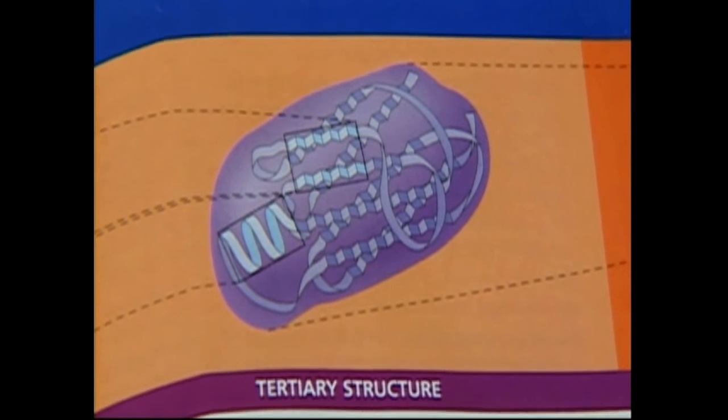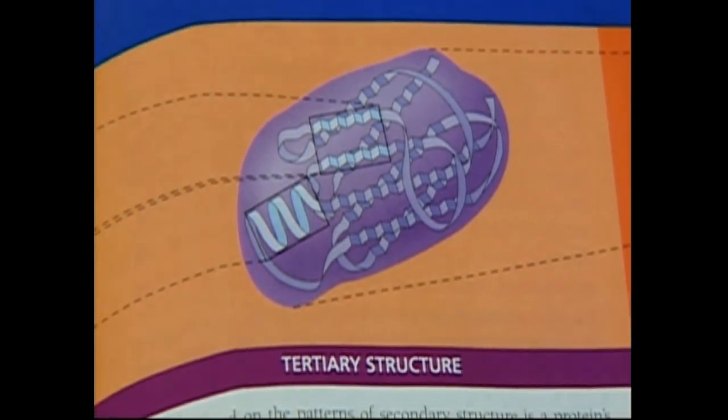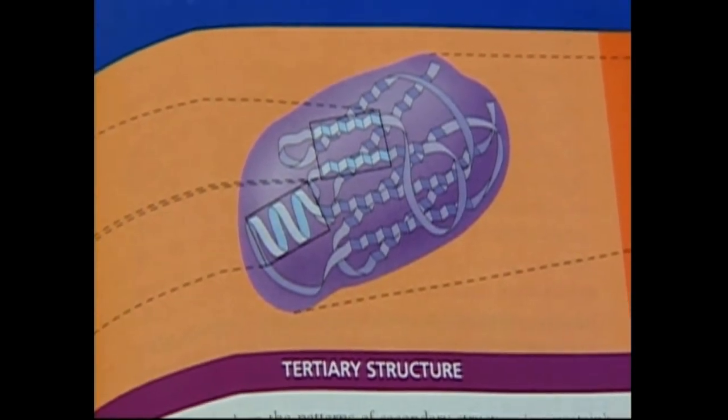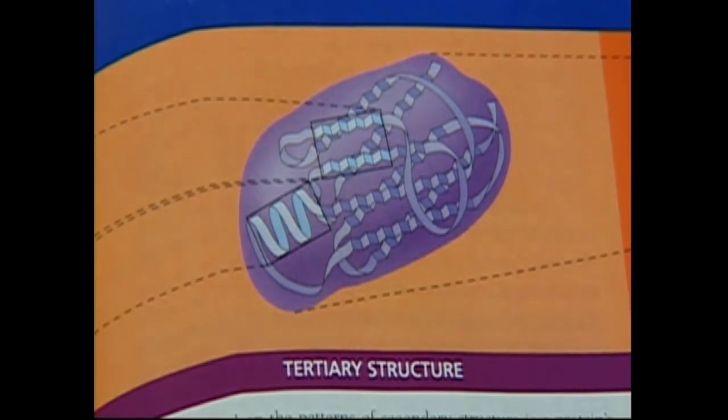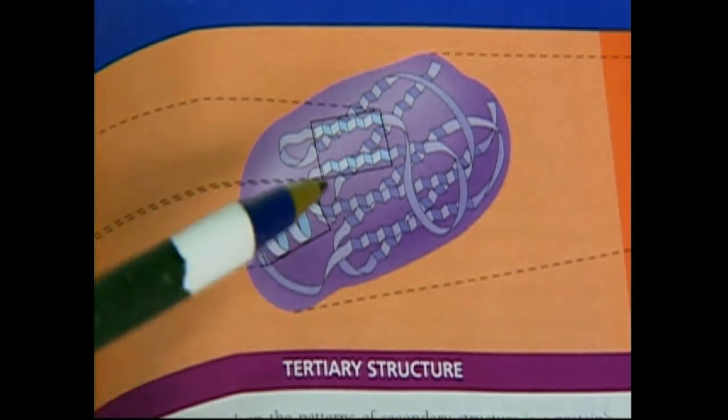The tertiary structure. This is where it gets complicated, folks. This is where there is proof that there is a god. Because the enzymes come out in their primary structure. They come out, they're made in, the ribosomes make them. They come out, then they form these alpha helixes and the beta sheets.